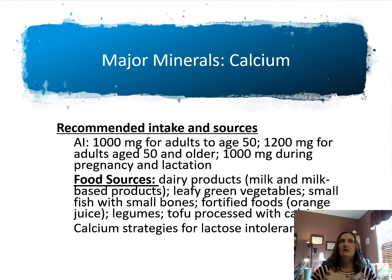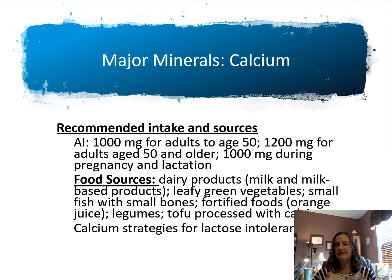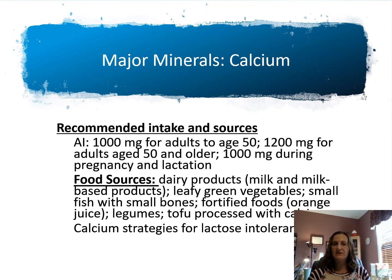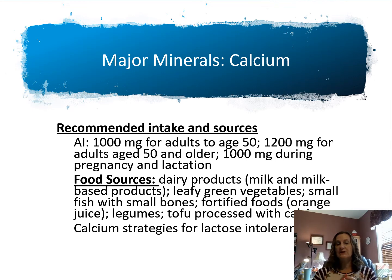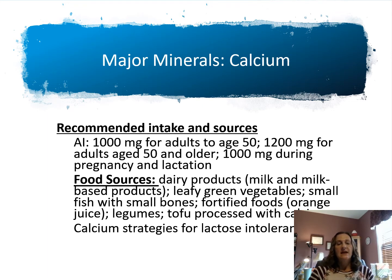The AI for all adults up to age 50 is 1,000 milligrams of calcium. Over age 50, it increases to 1,200 milligrams. It is the same in pregnancy and lactation, except for adolescent expecting mothers. Best sources include dairy products — milk, milk baked products — green leafy vegetables, sardines, and small fish with bones. We can also fortify calcium in foods like tofu, calcium-fortified orange juice, and legumes.